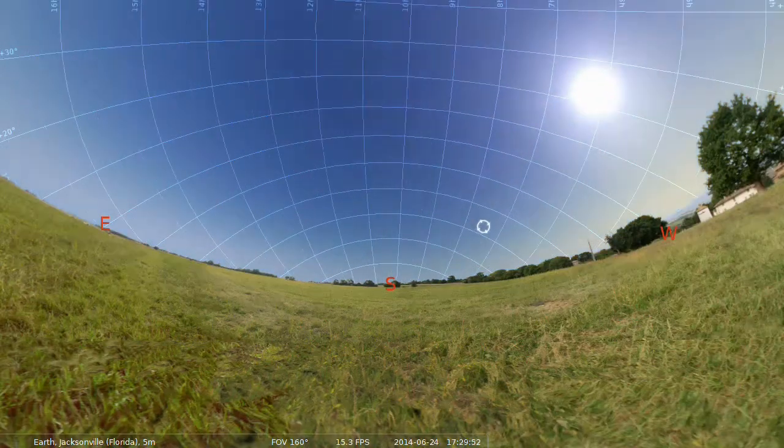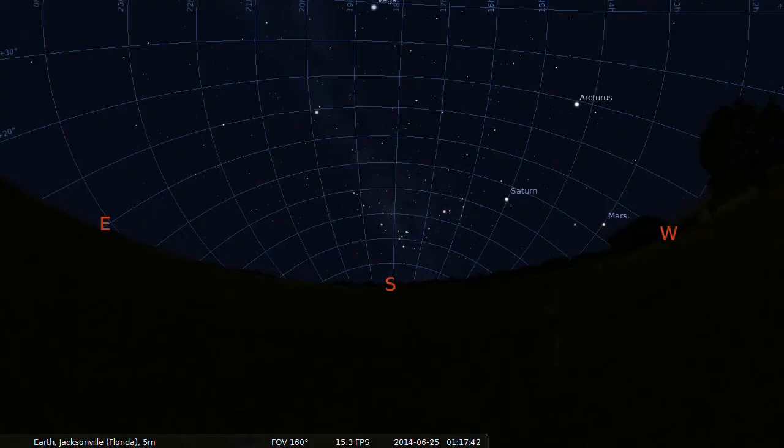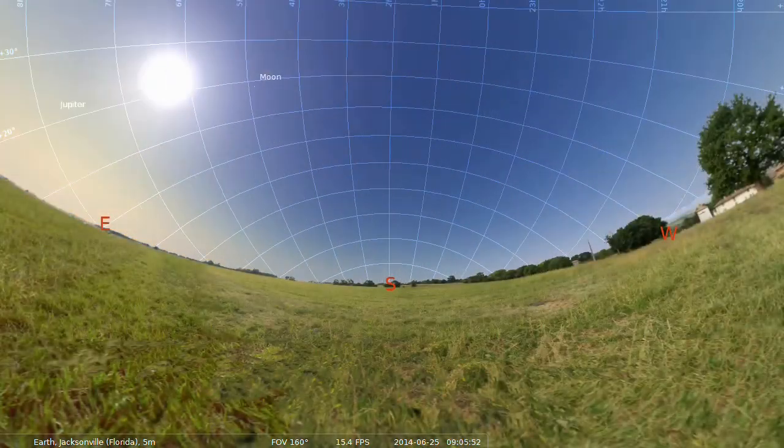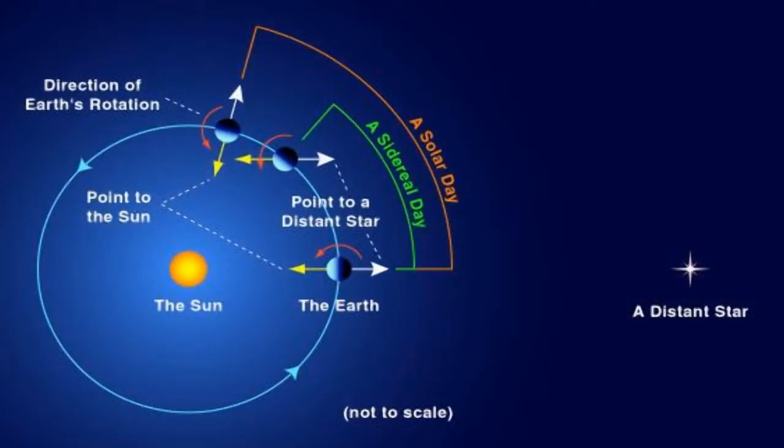Like the stars and planets, the Sun also appears to move on the celestial sphere. If you measure the time when the Sun is highest in the sky, you'll find it takes exactly 24 hours for the Sun to move all the way around the celestial sphere and return to its highest point. In fact, that's how we define a day, or what astronomers call a solar day.